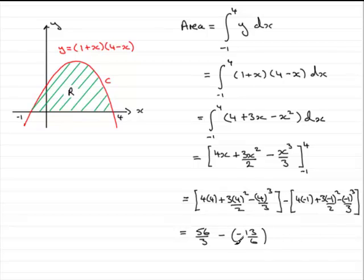So when you work that out, what you should find you get is exactly 125 over 6. You might like to actually finish that off with writing square units, or units squared, because it is an area.